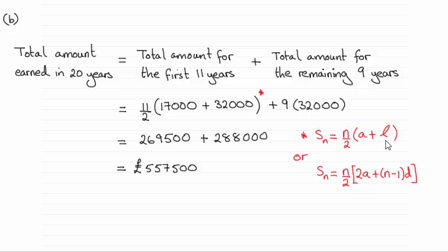And using that, you can see that n was 11 for the first 11 years, then we divide it by 2. And you've got the first term, which was £17,000, plus the last term, which was £32,000. Work that out, and that comes to £269,500.